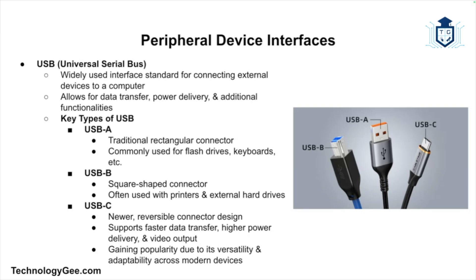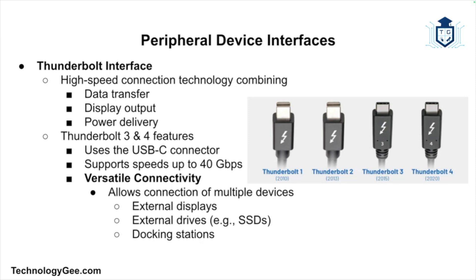Thunderbolt interfaces are high-speed connections that combine data transfer, display output, and power delivery through a single cable. Thunderbolt 3 and 4 use the USB-C connector, supporting speeds up to 40 gigabits per second and allowing users to connect multiple devices like displays, external drives, and docking stations.